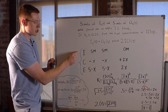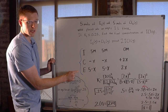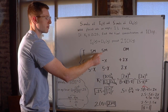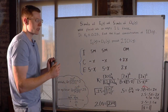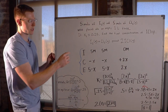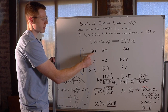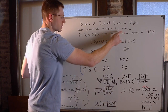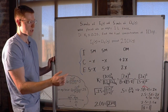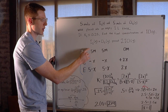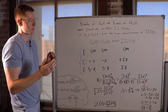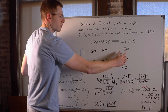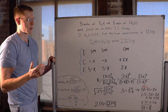ICE stands for Initial, Change, and Equilibrium. In the Initial row, we put the initial amounts of each of our chemicals — in this case, concentrations in units of molarity. We started with 5 moles of I₂ gas in a 1 liter flask, so that's 5 molar. We had the same amount of Cl₂, 5 molar concentration, and initially no ICl gas.